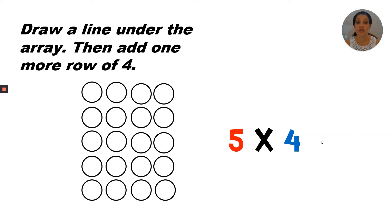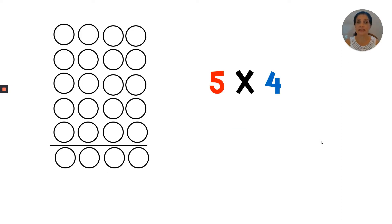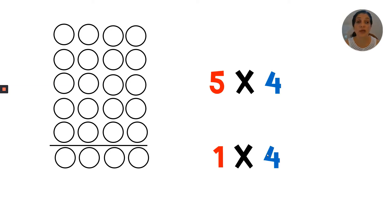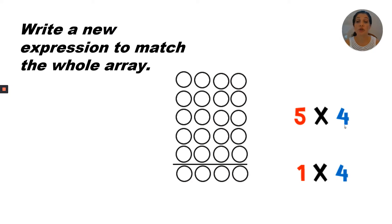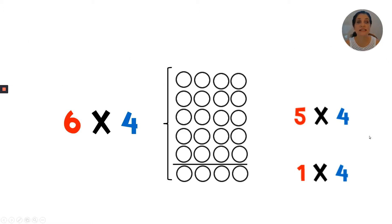Draw a line under the array, then add one more row of four. Now we have five rows plus one row, and they each have four in a row. So the expression for this one row would be one row of four, or one times four. Now write a new expression to match the whole array — six rows of four in each row. That's the whole array: six times four. That's the expression.